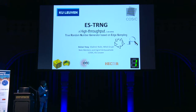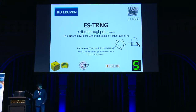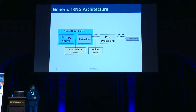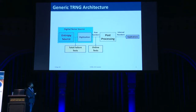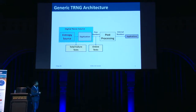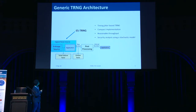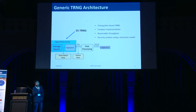We have a free-running oscillator and we are using a magnifier to check the edge — that's the principle of our edge sampling TRNG. This is a generic architecture of a TRNG, consisting of the entropy source, digitization, post-processing, and online tests. Only the entropy source can produce true randomness; the other components are purely deterministic. For this talk, we focus on the digital noise source; other components are future work. ESTRNG is a timing jitter-based TRNG with compact implementation, relatively high throughput, and security analysis supported by a stochastic model.